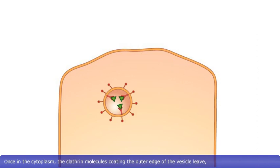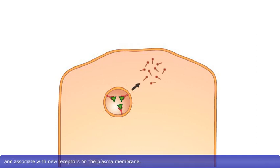Once in the cytoplasm, the clathrin molecules coating the outer edge of the vesicle leave and associate with new receptors on the plasma membrane.